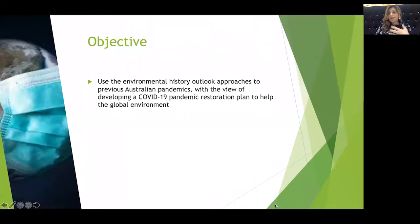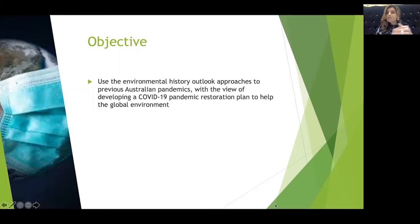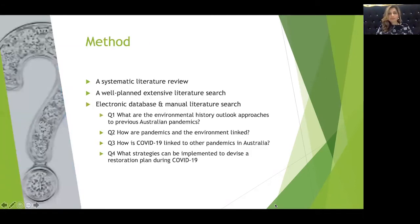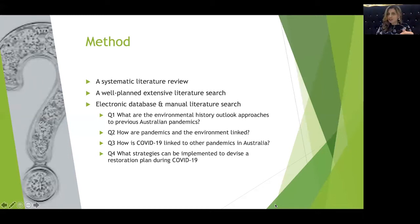The aim of my study is to use the environmental history outlook approaches to previous Australian pandemics, with the view of developing a COVID-19 pandemic restoration plan to help the global environment. A systematic literature review is carried out through a well-planned extensive literature search, conducted through an electronic database and a manual literature search. The information sources searched included publications, journals, books, magazines, and grey literature.